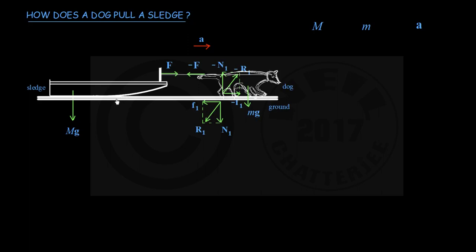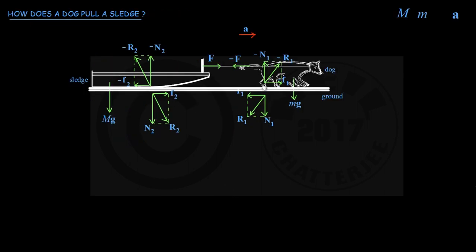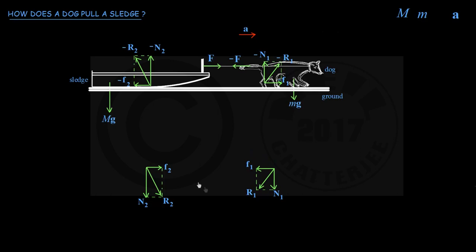Similarly, the sledge exerts a contact force R2 onto the ground at an angle slightly to the right of the downward vertical. As a reaction, the ground gives force minus R2 on the sledge; R2 and minus R2 form an action-reaction pair with components N2 and F2, and minus N2 and minus F2. Since we are interested in the motion of the sledge-plus-dog system, we only consider forces acting on the sledge and on the dog, ignoring all forces acting on the ground or on the earth — so R1, R2, and the reaction forces to gravity on the earth are all ignored.